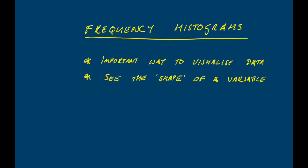If you have a variable that you've measured you can draw a frequency histogram of it and it's going to tell you lots of important things. It's going to tell you what the shape of the data is, where the middle of the distribution is, whether there's a peak, whether your data distribution is asymmetrical or symmetrical, and whether there are any really extreme values that you might need to worry about.